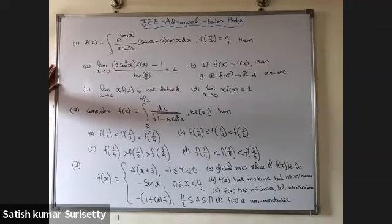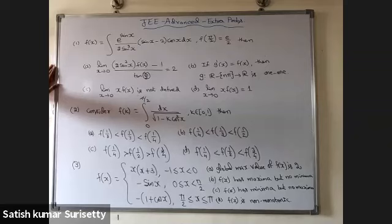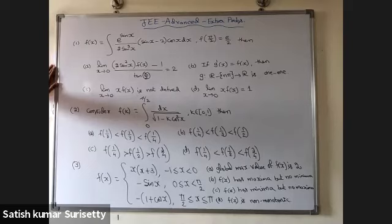Third question: f(x) equals x(x+3) for −1 ≤ x < 0; −sin x for 0 to π/2; and −1 + cos x for π/2 to π. Identify the correct options: first, global maximum value of f(x) is 2; second, f(x) has maxima but no minima; third, f(x) has minima but no maxima; fourth, f(x) is non-monotonic.